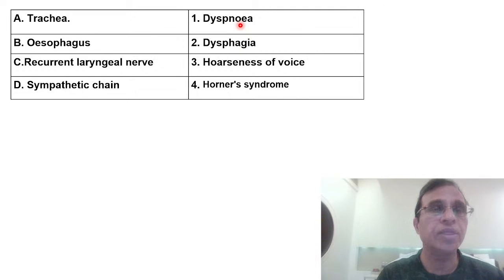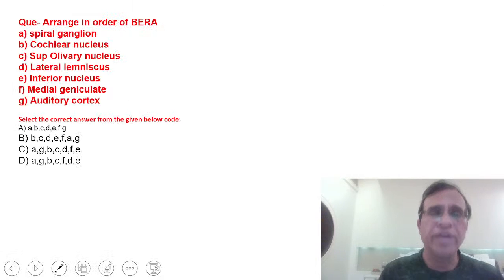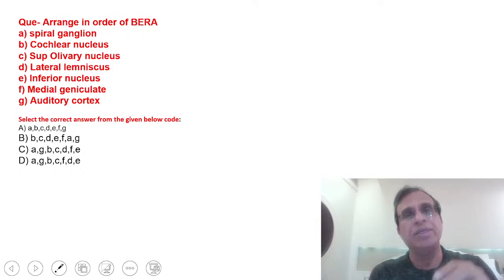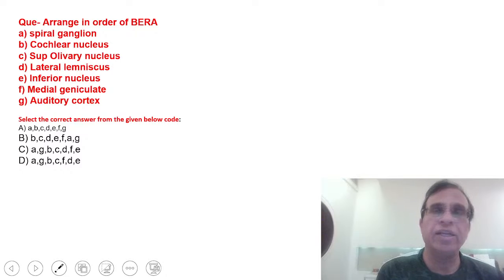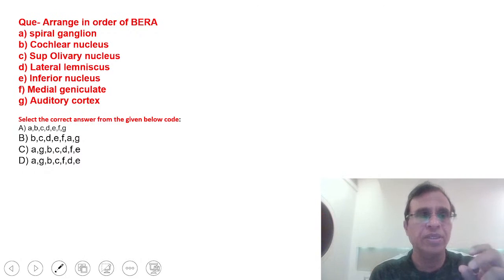A very regular question. I don't know how many times they've asked about the auditory pathway. They just ask you to align the auditory pathway in what sequence the sound travels. The choices given are spiral ganglion of the retina, cochlear nucleus, olivary nucleus, lateral lemniscus, inferior colliculi, medial geniculate ganglion, auditory cortex.